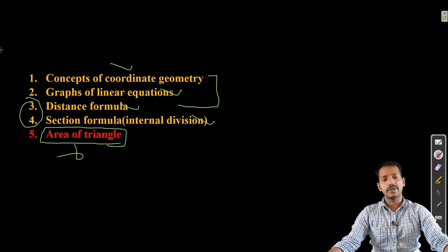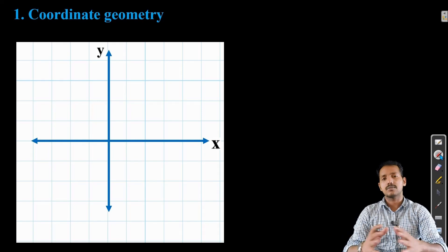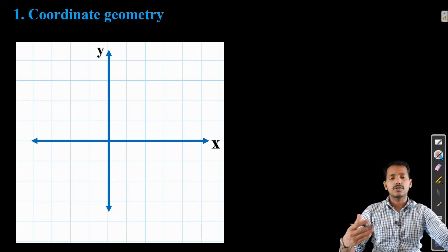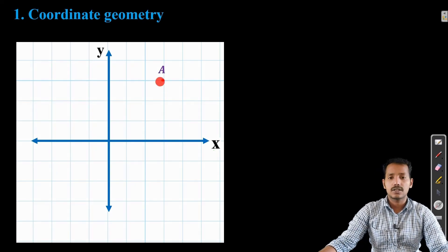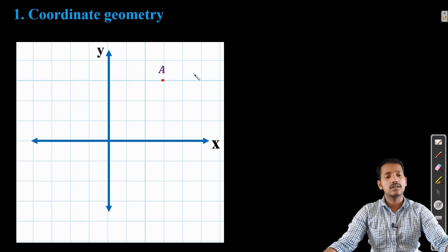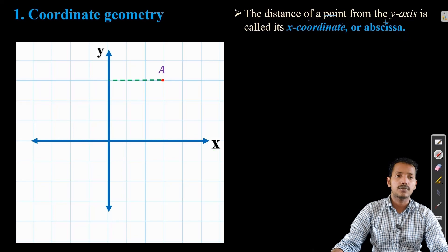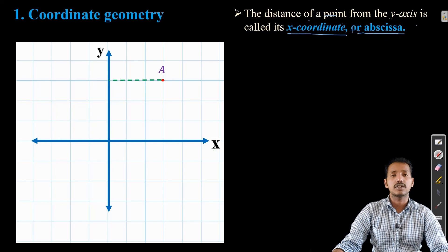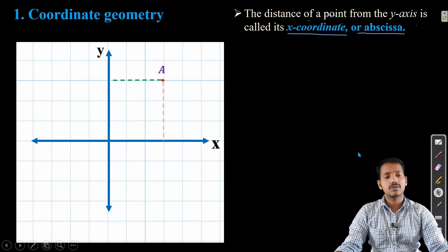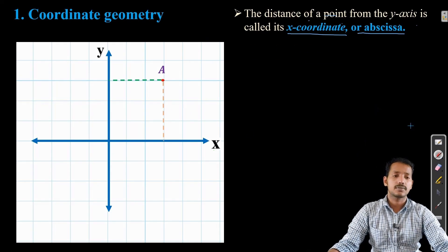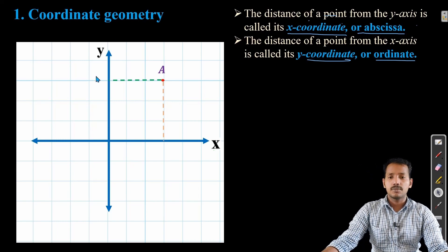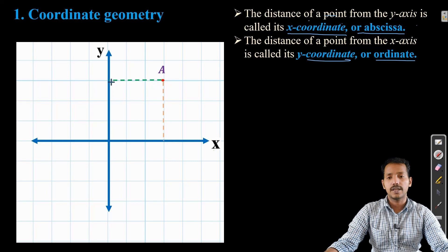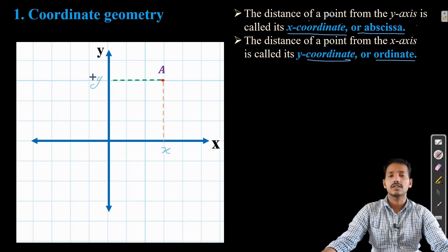So let us start with the basic concept of Coordinate Geometry. In Coordinate Geometry we use a Cartesian coordinate system to locate the position of a point in terms of two coordinates. For that we need two axes. Consider a point A in the Cartesian coordinate system. The distance from this point to the y-axis is called the x-coordinate, or abscissa — both names we will use. The distance from this point to the x-axis is called the y-coordinate.